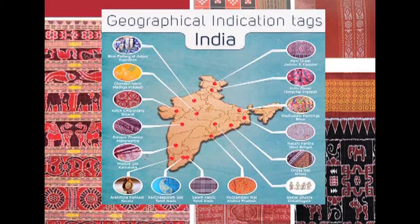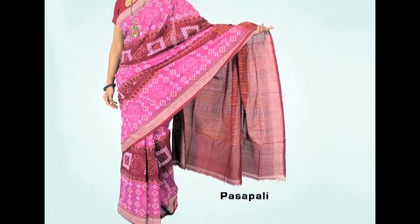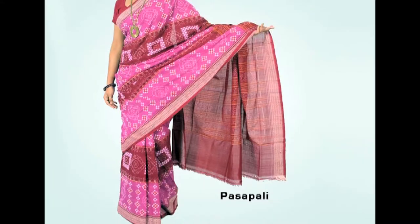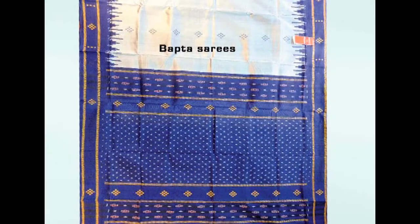The Government of India has tried to protect this art of weaving and it is included in the Government of India's GI registry. The varieties of Sambalpuri saree include Sonipuri, Pasipali, Bomkai, Barpali and Bapta sarees — all different kinds of Sambalpuri ikats which are very much in demand in the market.